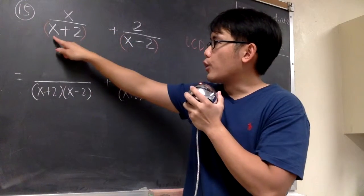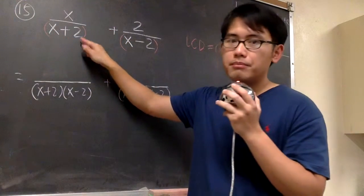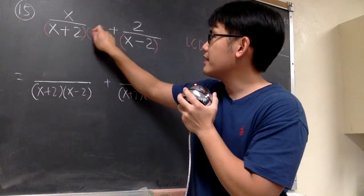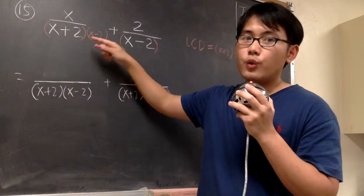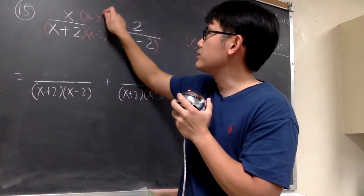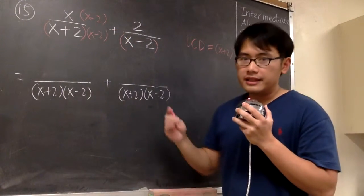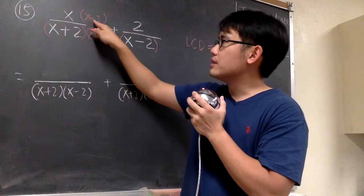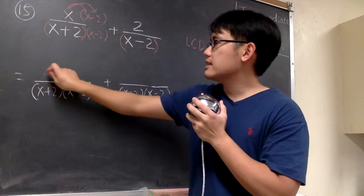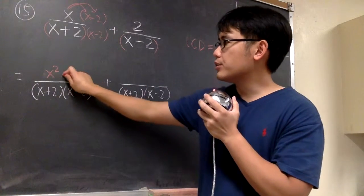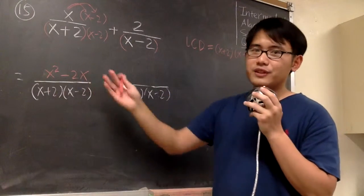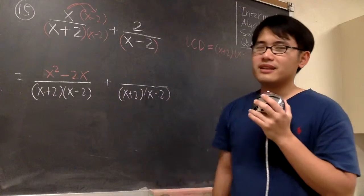For the first fraction, originally, the denominator is x plus 2. But I need to have another x minus 2. Therefore, we are going to multiply on the bottom by x minus 2. We also have to do the same on the top. So we multiply x by x minus 2. And in this case, we are going to multiply out the top. So we distribute the x into the parentheses, x times x, that will give us x squared, x times negative 2, that's negative 2x. So that's how we achieve for the first fraction, change the fraction so that it has the LCD.